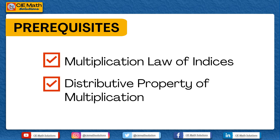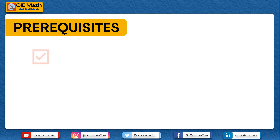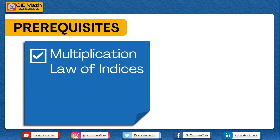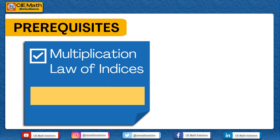Let us start with the multiplication law of indices, which states that when we multiply two numbers or variables of the same base, say x raised to m and x raised to n, the product is given by the same base raised to the sum of the indices or powers, that is x raised to m plus n.